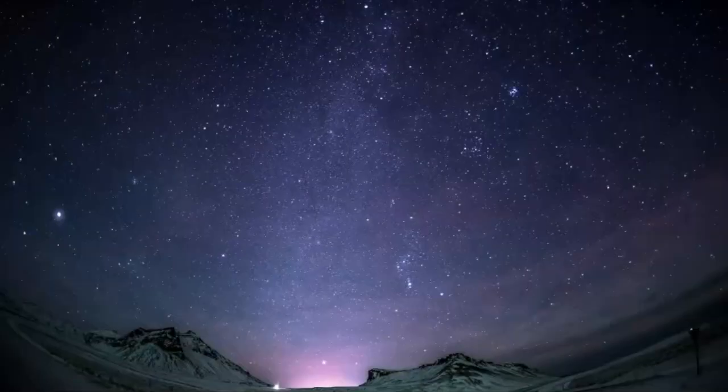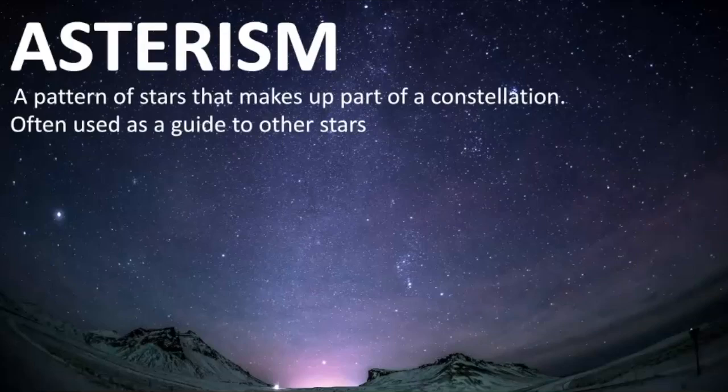Before we dive into the differences between the winter triangle and winter hexagon, let's first review what an asterism is. An asterism is a pattern of stars that can make up part of a constellation, or it can connect a few bright stars that make their own unique pattern. They're often used as a guide to other stars.